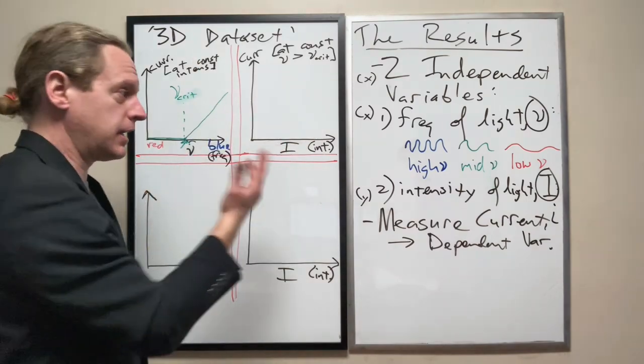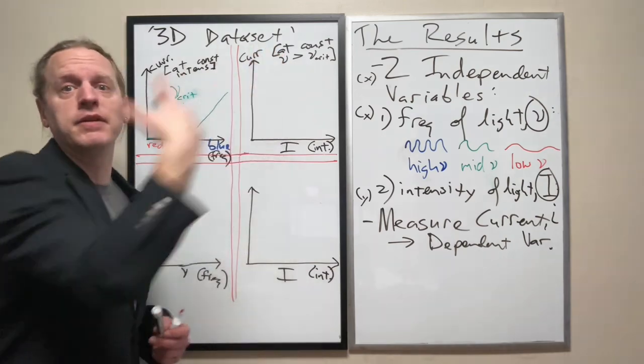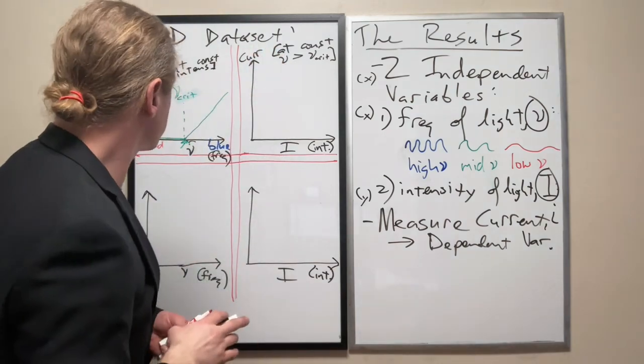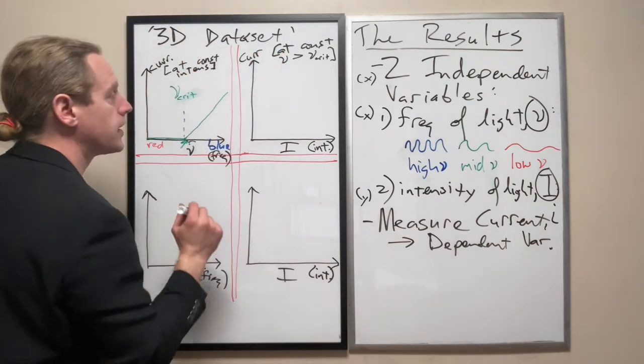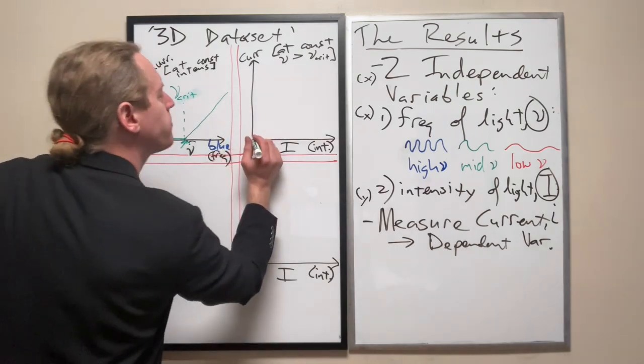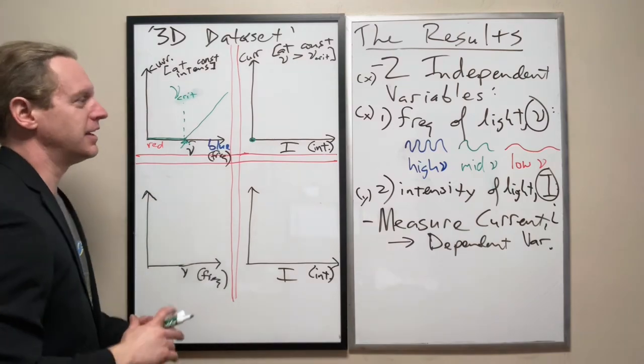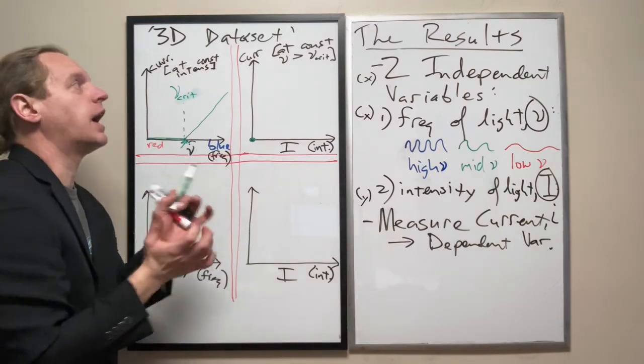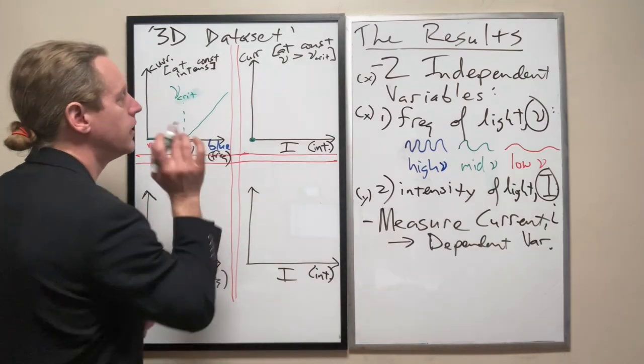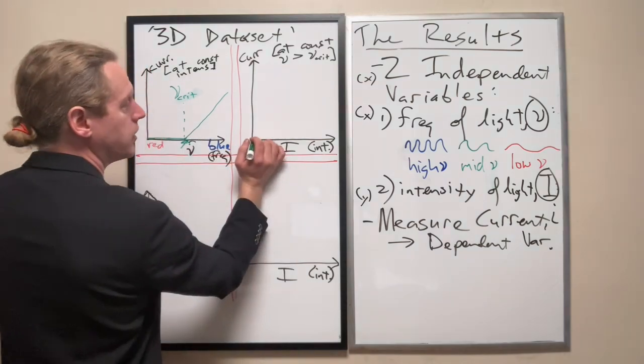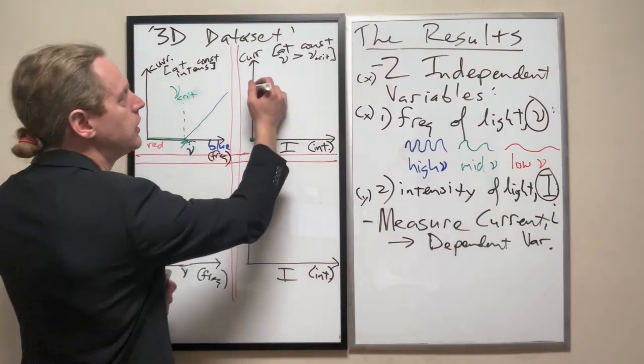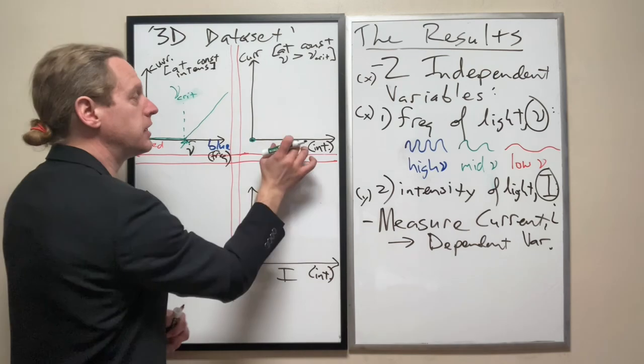And now what I'm going to do is I'm going to measure the current based on extremely low intensity. As low as I can go down below, or before zero, but not actually at zero. And then, so once I go up in increasingly high intensities, I'm going to see what happens. Does the current change?